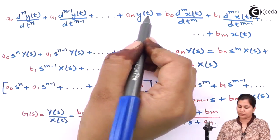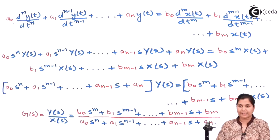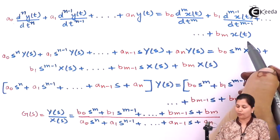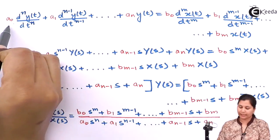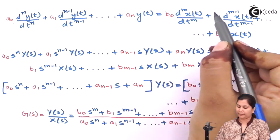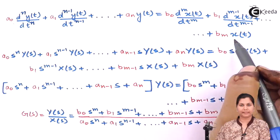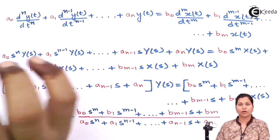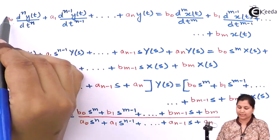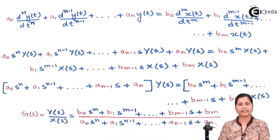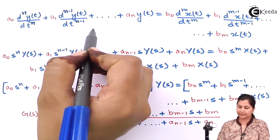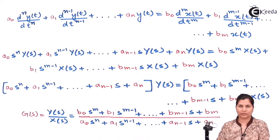The order of the output is n and the order of the input is m. a0, a1, an, b0, b1, and bm — these are the coefficients. This is how an nth order differential equation is written, or a system having nth order is represented. This is a linear time invariant differential equation.